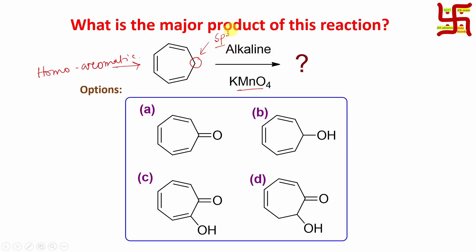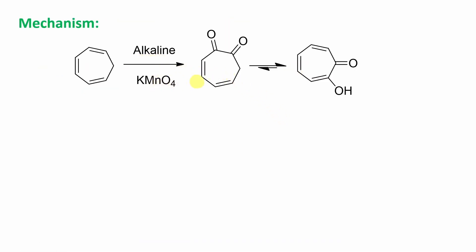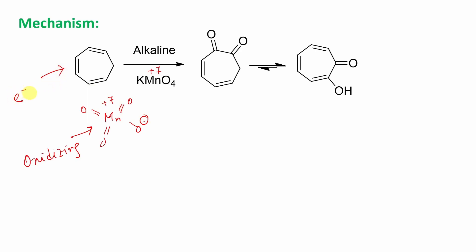So if you treat this with permanganate, what is the product? Permanganate is an oxidizing agent because the manganese atom is in +7 oxidation state, making it very electron deficient. That manganese center is oxidizing — it will take electron density from somewhere else, from electron-rich parts. Pi electrons are loosely held compared to sigma electrons, and here you can see 3 pi bonds, giving 6 pi electrons in conjugation — it's an electron reservoir.